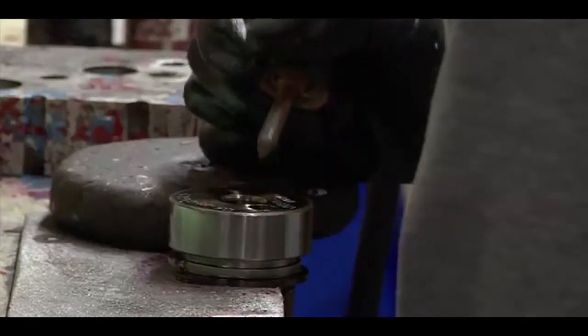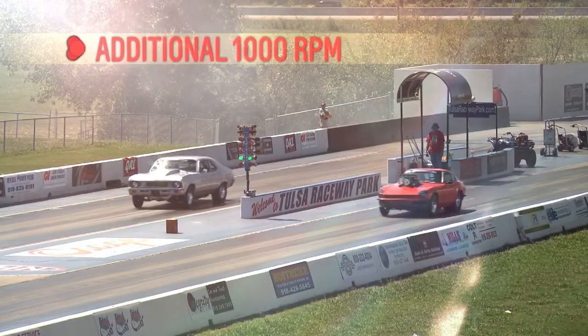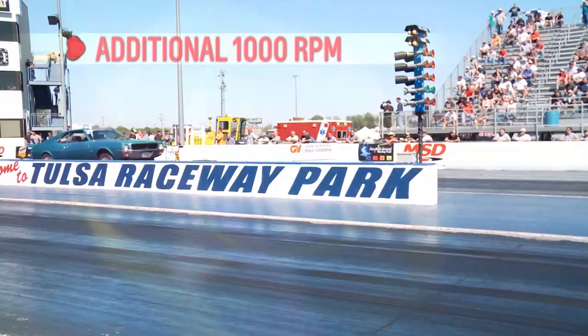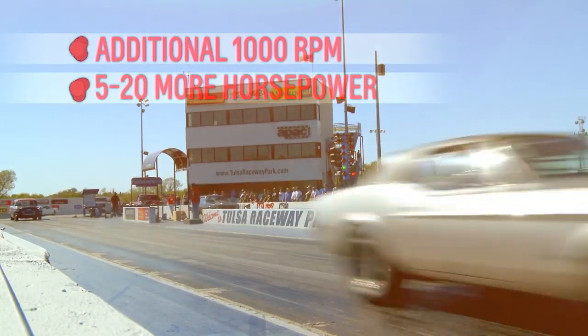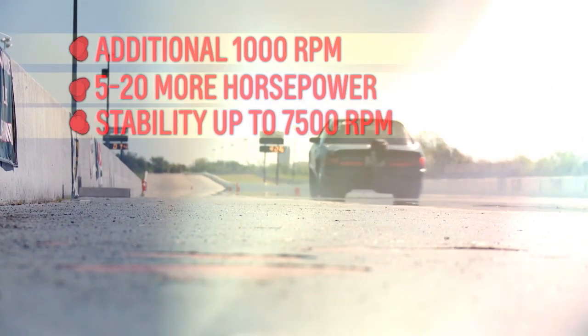For the consumer, these manufacturing and racing technology advancements combine to offer an additional 1,000 RPM of engine speed operation over other hydraulic roller camshafts. Power increases from 5 to 20 plus horsepower and stability up to 7,500 RPM have been achieved.